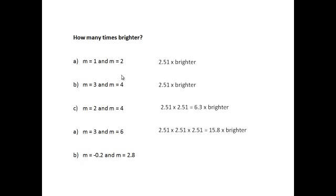And then lastly, if we have a star which is magnitude minus 0.2 and another which has a magnitude of 2.8, what is the difference in brightness? Well, the difference in the magnitudes, again, is 3. So there you go, 2.51 times 2.51 times 2.51, it's 15.8 times brighter.